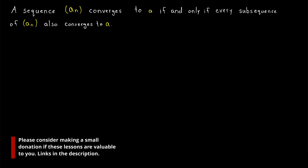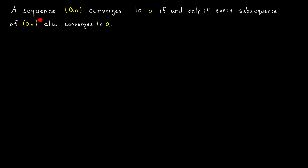It's time for our first important proof with subsequences. This is a very nice result. We're going to prove that a sequence aₙ converges to a if and only if every subsequence of aₙ also converges to a. We need to prove the forward direction first — if aₙ converges to a, then every subsequence also converges to a. Then we need to prove that if every subsequence converges to a, then aₙ converges to a. That takes about one sentence to prove.